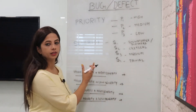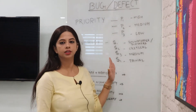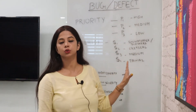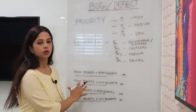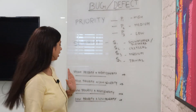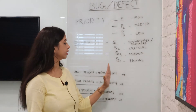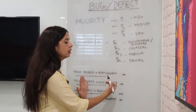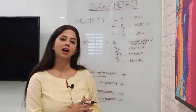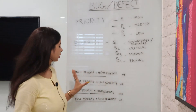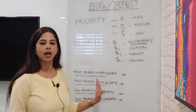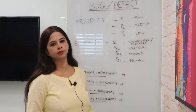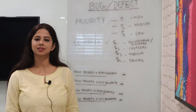We have clearly understood the difference between priority and severity. Each bug needs to be assigned a proper priority and a proper severity. A bug can be high priority and high severity at the same time, and another bug can be high priority and low severity. This is a very commonly asked interview question, so we'll discuss all the combinations with examples.